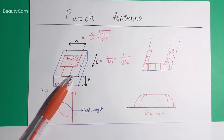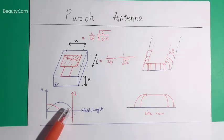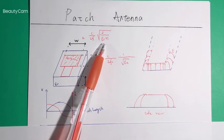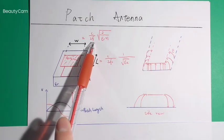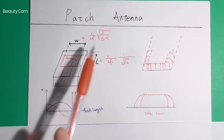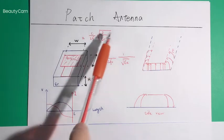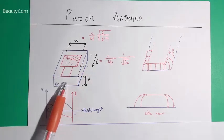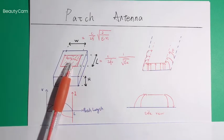Now we've already have some basic concepts of the patch antenna and the radiation mechanism. Next we will talk about how to design a patch antenna. This equation indicates the maximum width of the patch antenna, where f is the radiation frequency and Er is the permittivity of the substrate. Once we decide the width, we can use it to calculate the effective permittivity of this structure.